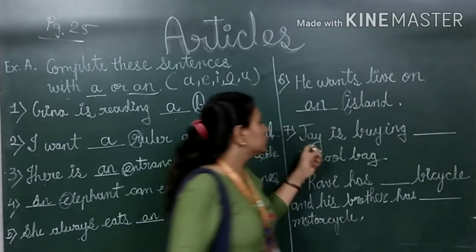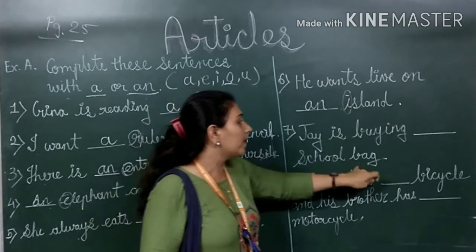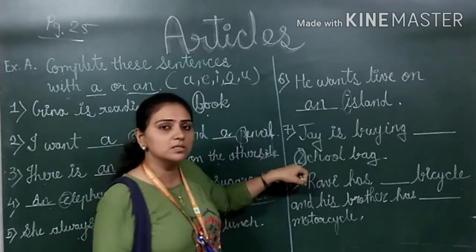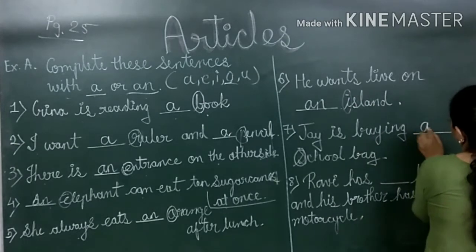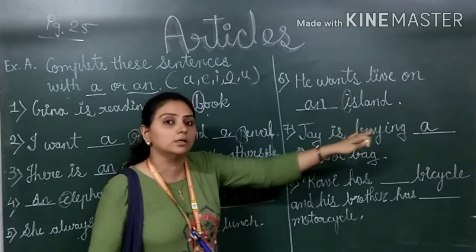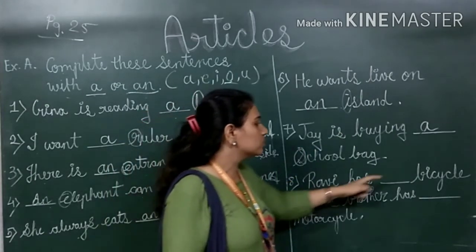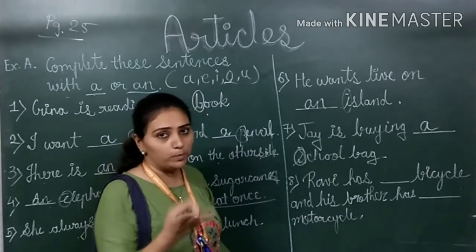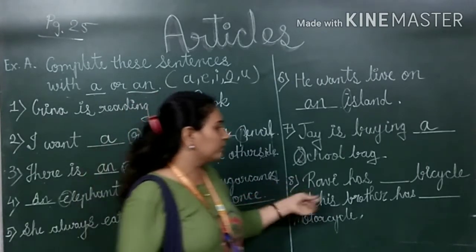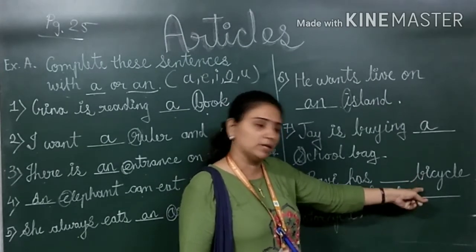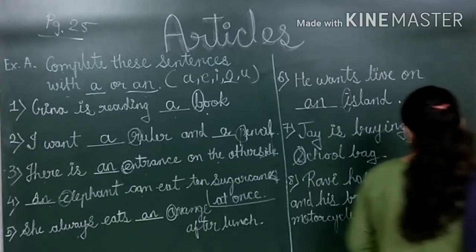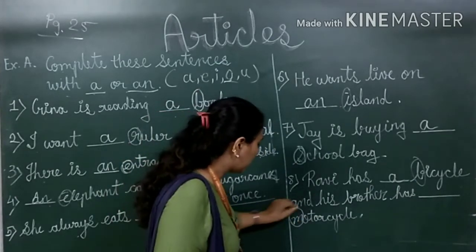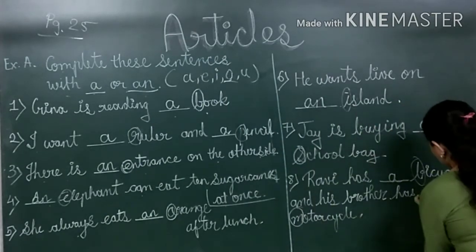Number seven is: Jay has blank school bag. 'School' starts with S, which is a consonant, so we write 'a school bag'. Number eight is: Ravi has blank bicycle and his brother has blank motorcycle. 'Bicycle' starts with B — consonant — so we write 'a bicycle'. 'Motorcycle' also starts with M, a consonant, so we write 'a motorcycle'. The answer is: Ravi has a bicycle and his brother has a motorcycle.